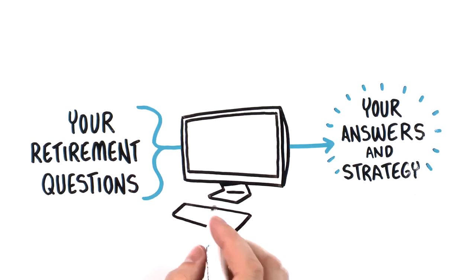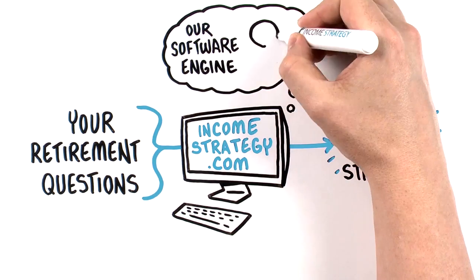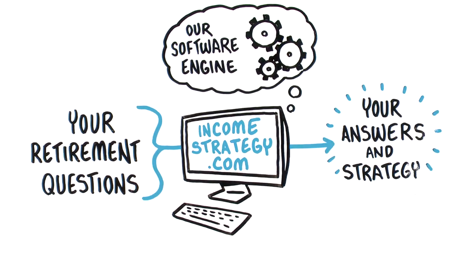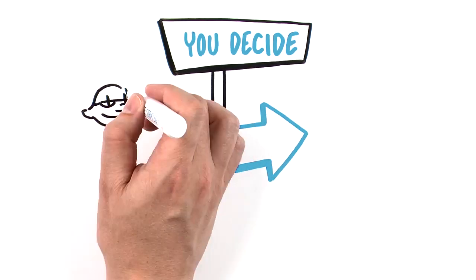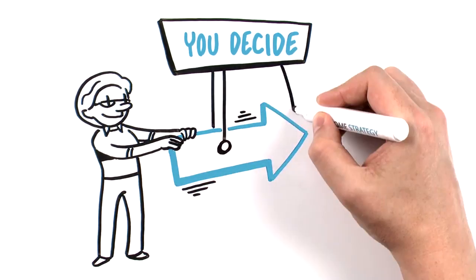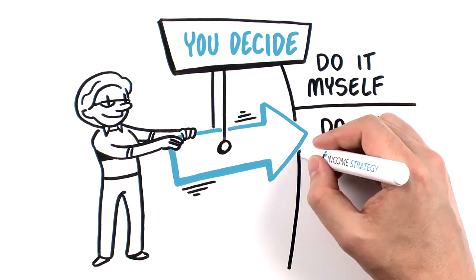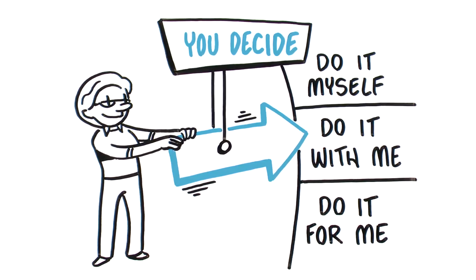It's called income strategy, and it is available to retirees just like you. You decide how you want us to help create your smart income strategy. You can do it yourself, have us do it with you, or we can do it all.